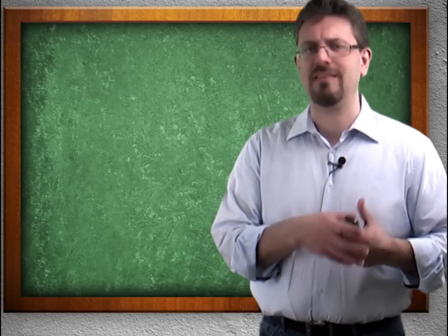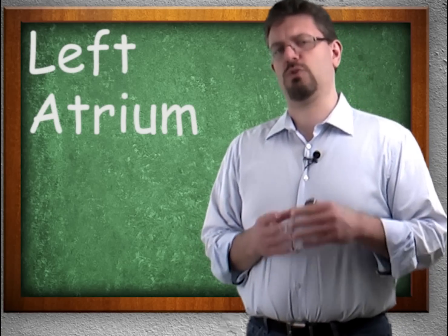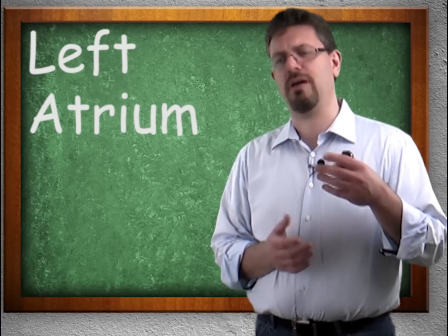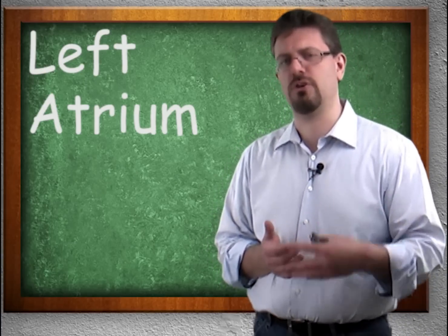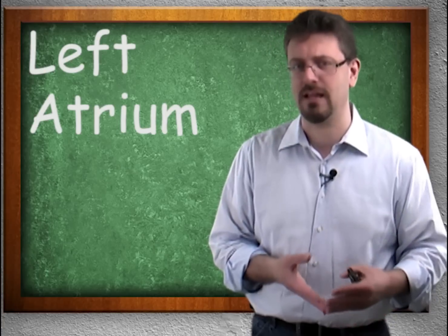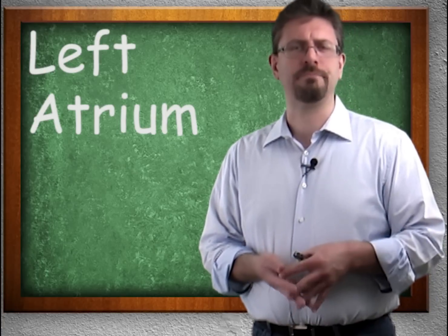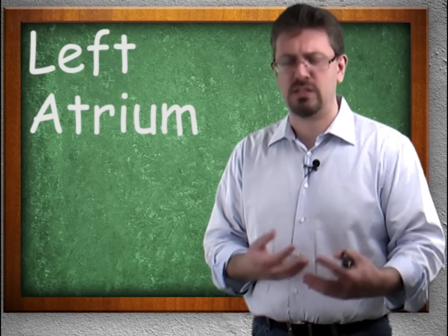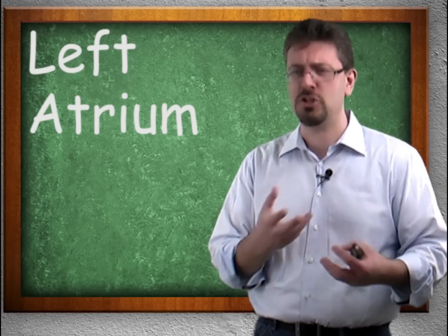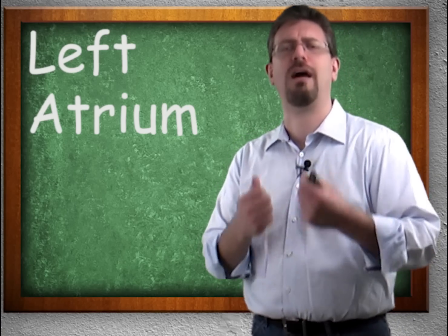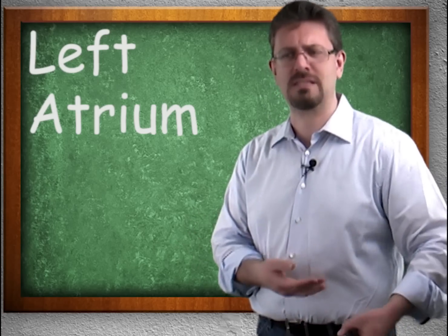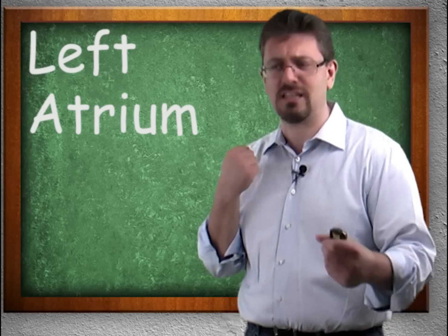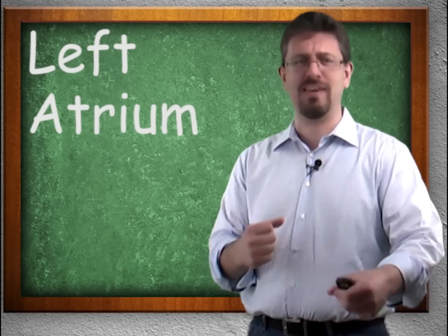Moving to the left side — the left atrium. If the right atrium was receiving all of the deoxygenated blood, all the waste blood from your toes and your nose and your elbows and your knees, then the left one is receiving blood rich in oxygen. This blood is full of hope — it's new, it's full of oxygen, it's gotten rid of the waste. It's a brand new day for the left atrium — it's got the oxygen and it's ready to go.